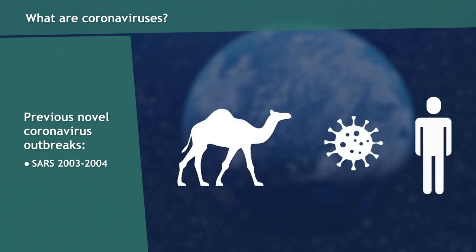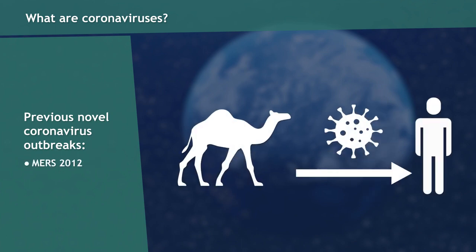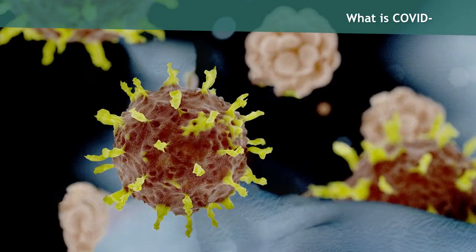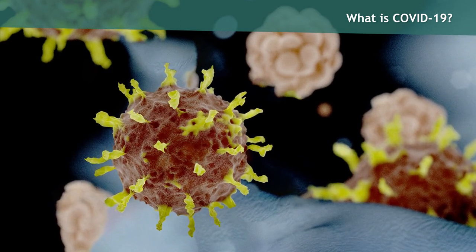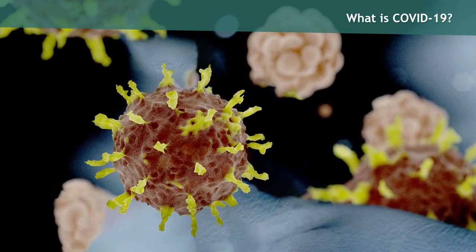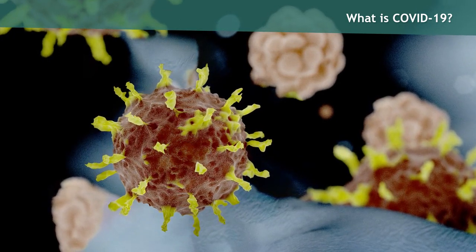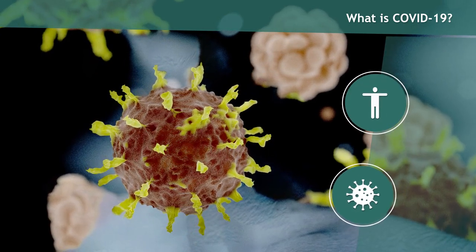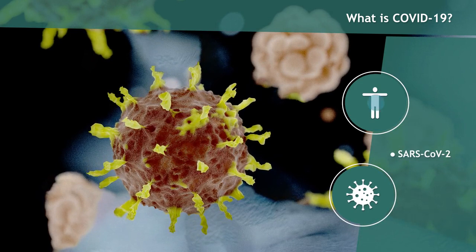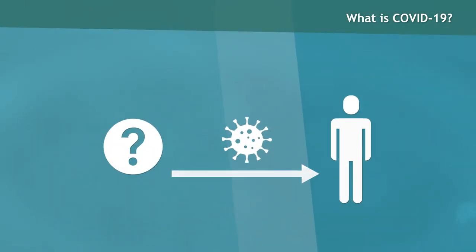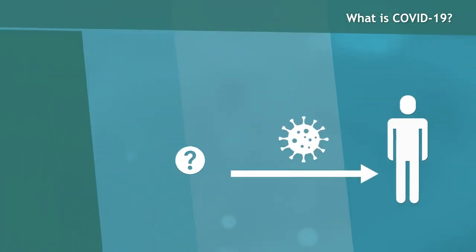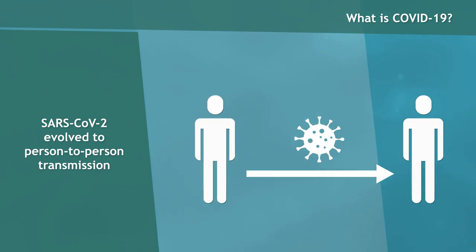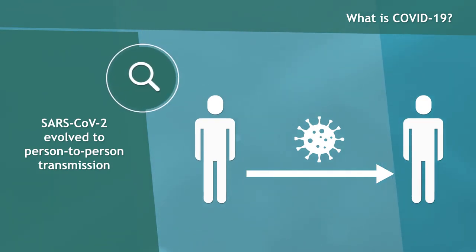More recently, the Middle East Respiratory Syndrome, or MERS outbreak, affected the Arabian Peninsula in 2012. Coronavirus disease 2019, referred to as COVID-19, is the latest outbreak. It's caused by the human body's reaction to a new strain of coronavirus known as SARS-CoV-2. SARS-CoV-2 evolved from an animal-to-person transmission to a person-to-person transmission and was first detected in Wuhan, China.